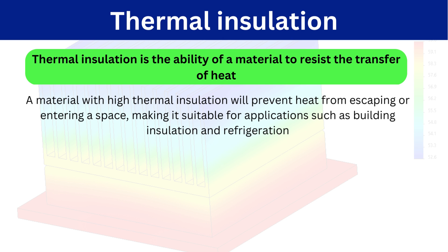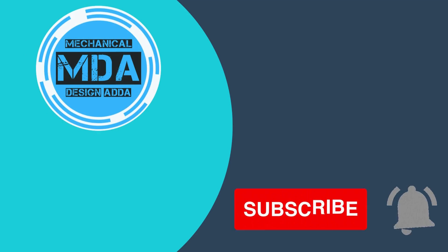Next we have thermal insulation. Thermal insulation is the ability of a material to resist the transfer of heat. The material with high thermal insulation will prevent heat from escaping or entering a space, and it is suitable for applications such as building insulation, refrigeration, or insulating hot heating lines and pipelines to prevent heat transfer from inside to outside or vice versa.